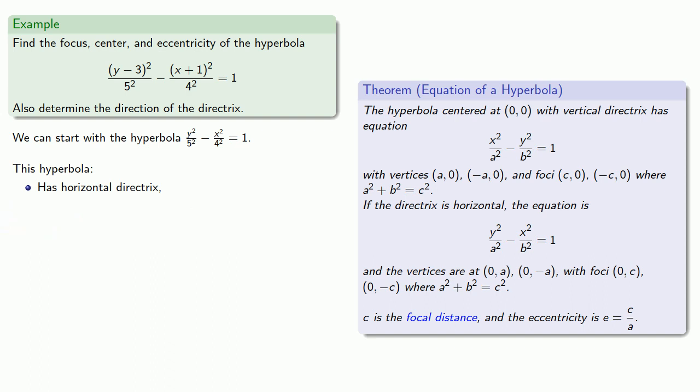So our hyperbola will have horizontal directrix, center (0,0), and vertices at (0,5) and (0,-5).